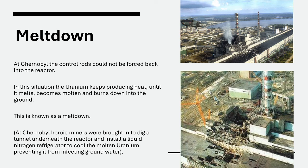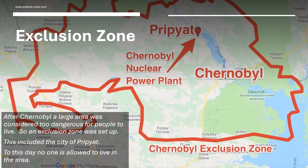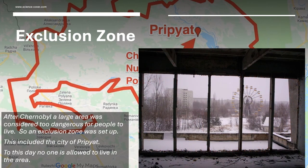At Chernobyl, heroic miners were brought in to dig a tunnel underneath the reactor and install a liquid nitrogen refrigerator to try to cool the molten uranium and prevent it from infecting the ground water. After the Chernobyl incident, a large area was considered radioactive and too dangerous for people to live, so an exclusion zone was set up. This includes the city of Pripyat, which was evacuated and to this day no one is allowed to live in the area.